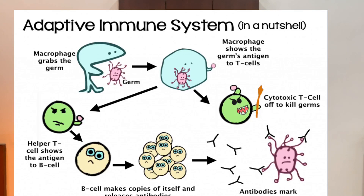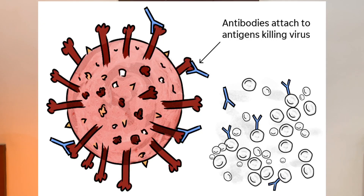The antibodies created by B-cells for every virus depend upon the shape of that virus — they fit into it and kill it. So this is how the entire system works.